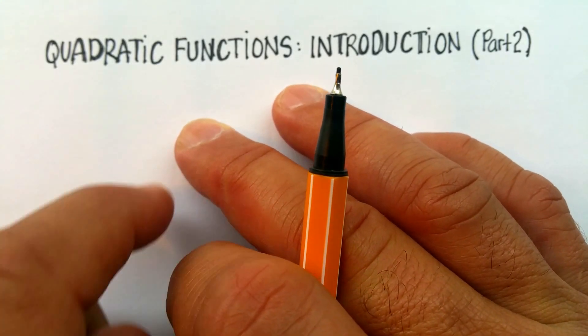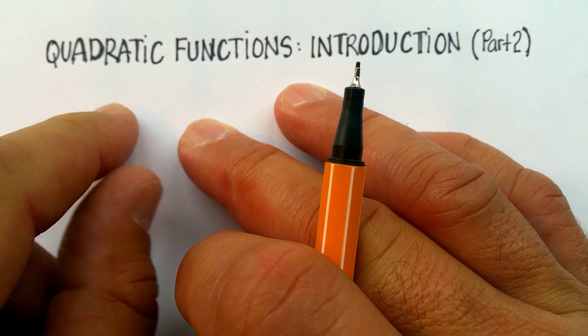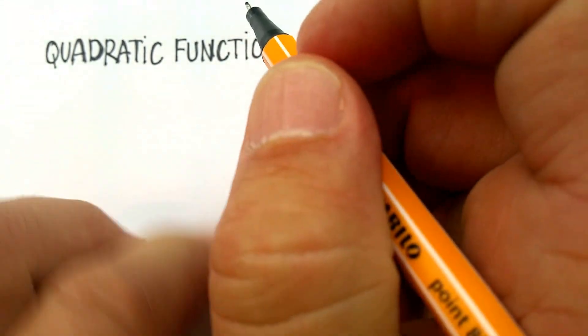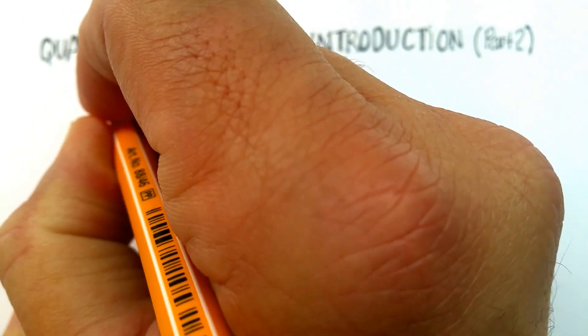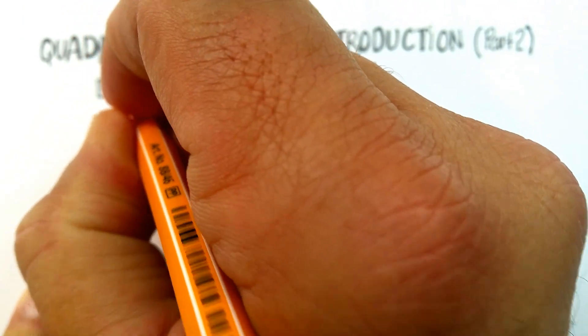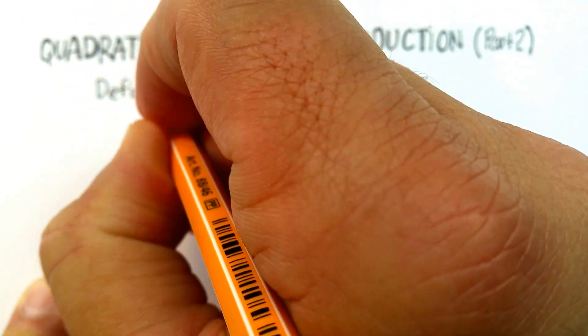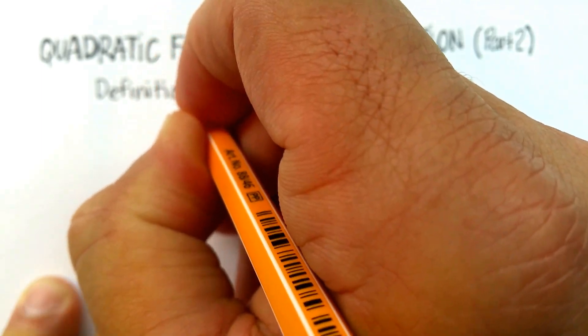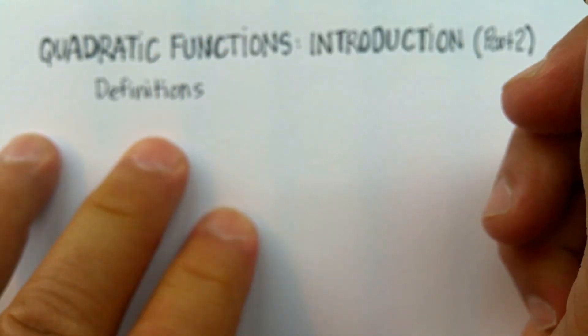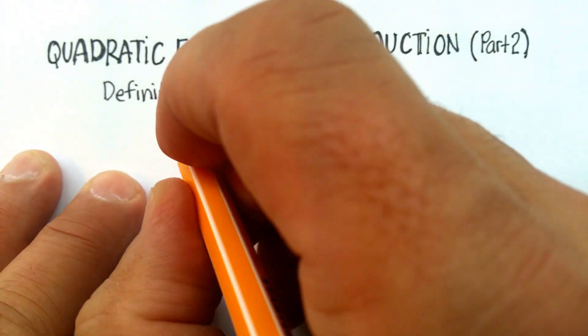Okay, in this video, we're going to go over part two of the introduction to quadratic functions. And this time, we're going to do some definitions. And what I'm going to do specifically is to define the different parts of the standard quadratic function. So let's get started.